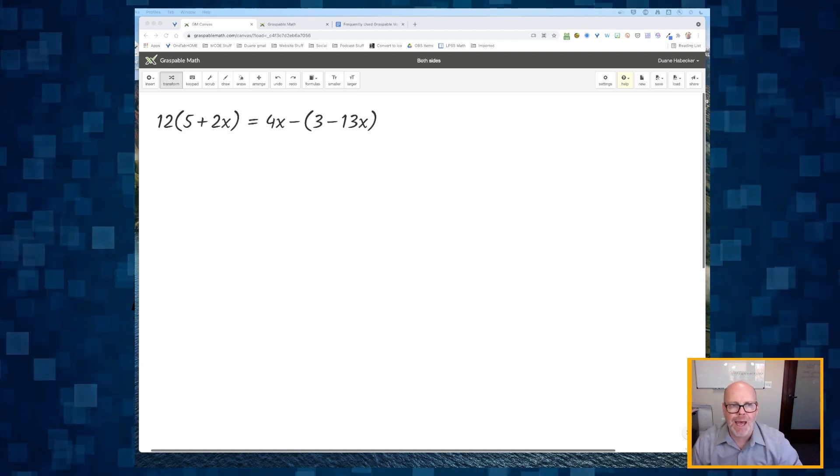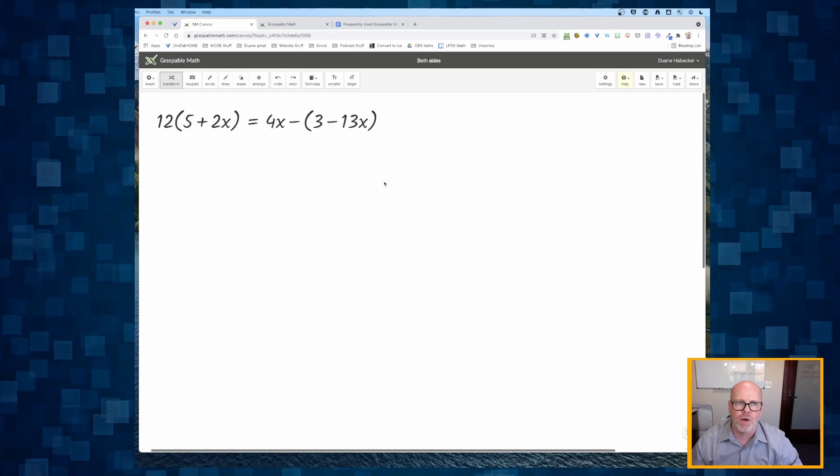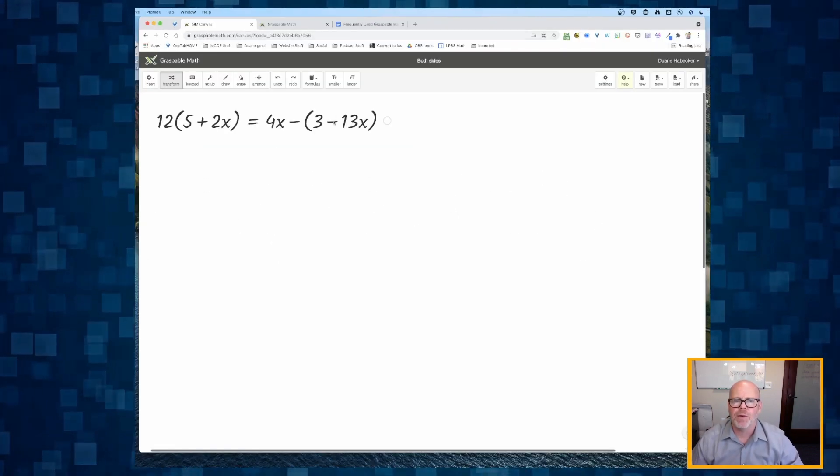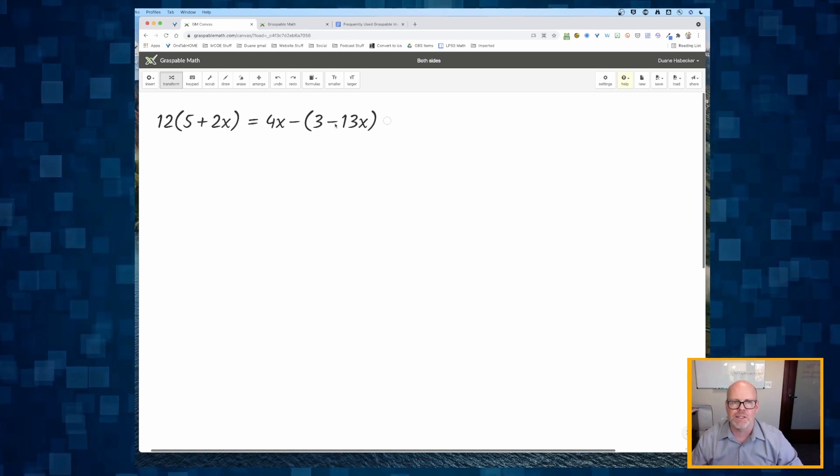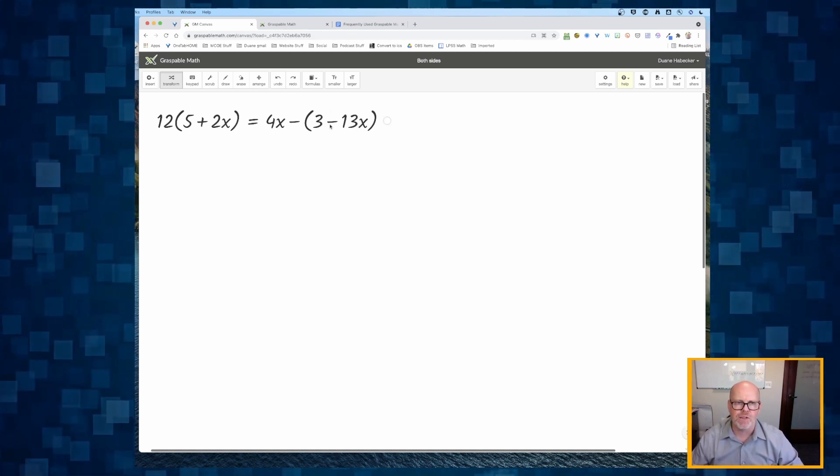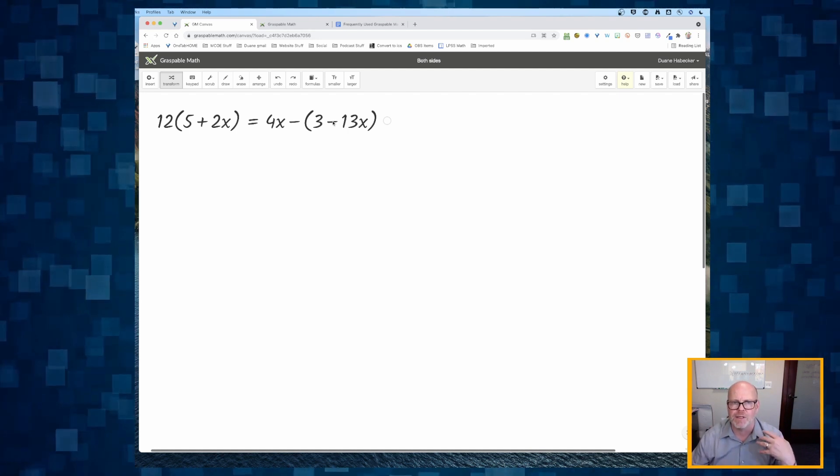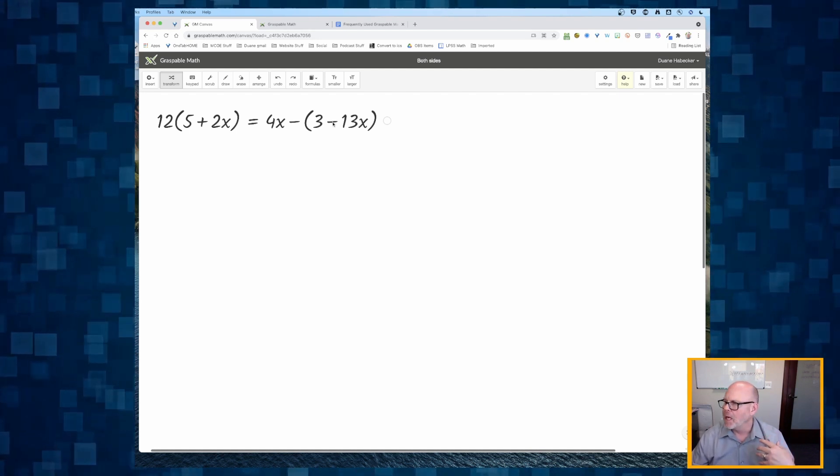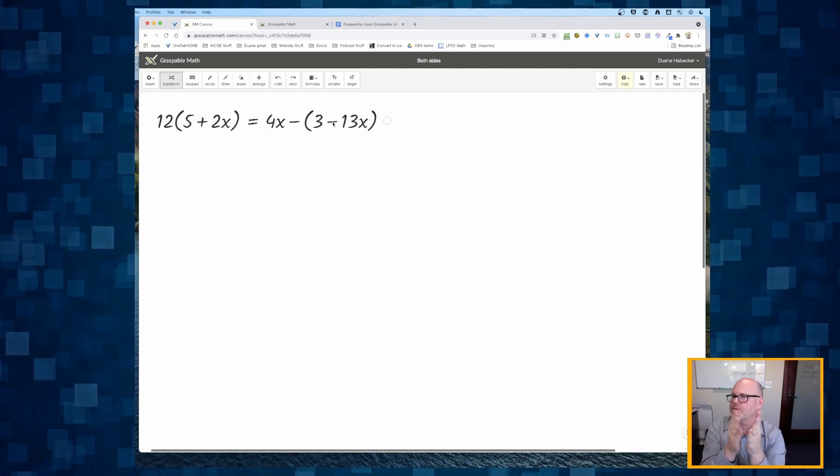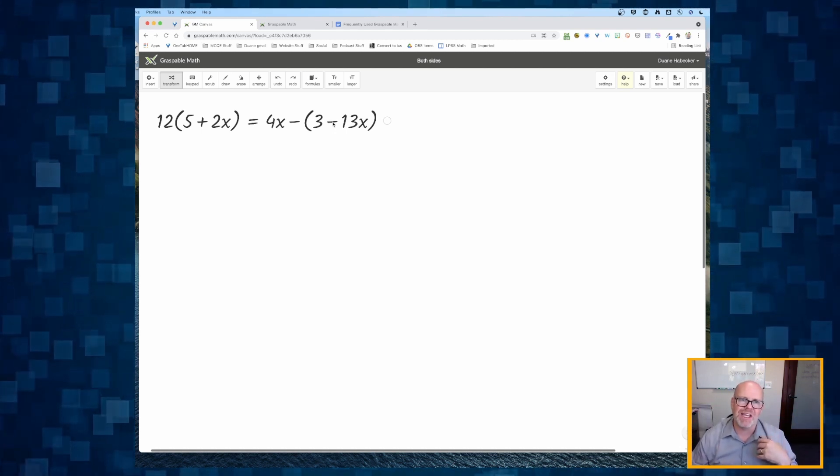The neat thing about Graspable Math is if I want to break a rule, I'm at graspablemath.com. So if I want to break the rule and somehow want to simplify this 3 minus 13x, the way I would try and simplify it is I'd click on that operator. And if I could simplify it, they would be simplified, but it's shaking its head. Look at that.